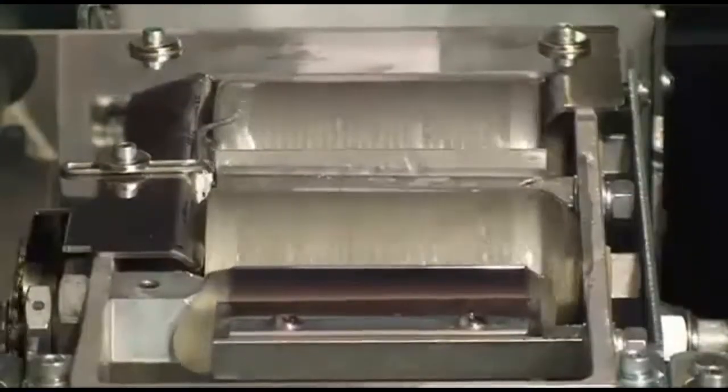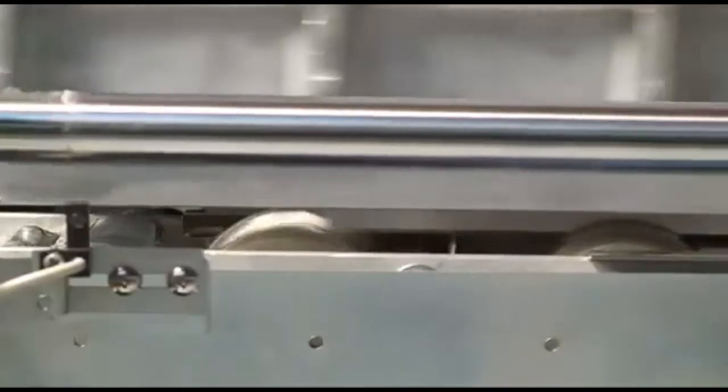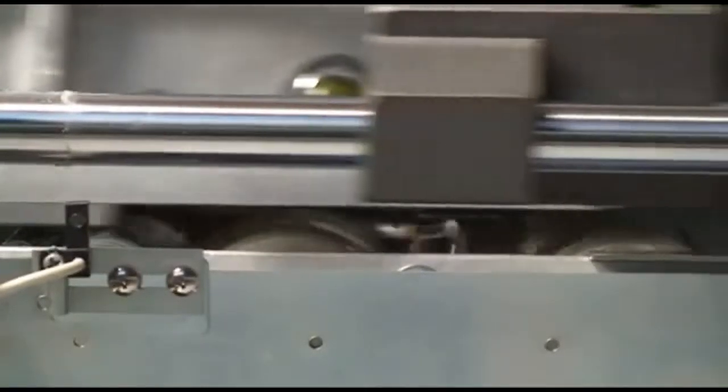Twin glue rollers ensure full and even coverage of the spine. A metering roller is included to smooth out the glue applied to the backbone.